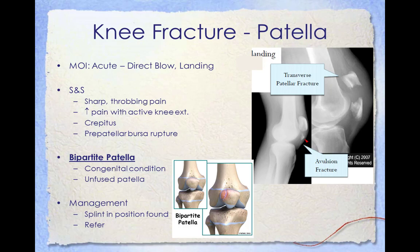A patella fracture is a fracture of the kneecap and is one of the most common knee injuries, usually resulting from a hard blow to the front of the knee or landing from a fall on the patella. The incidence of patella fractures in the NFL is on the rise, as players are removing knee pads from their uniforms, exposing the superficial bony structure to helmets, shoulder pads, and hard ground impact. Common signs and symptoms include sharp and throbbing pain, increased pain with active knee extension, crepitus, and possible pre-patella bursa rupture. Management includes splinting in the position found and referral. Treatment options depend on fracture type: undisplaced fractures require four to six weeks of immobilization in a cylinder cast, while displaced fractures require surgical treatment followed by quadriceps strengthening exercises.